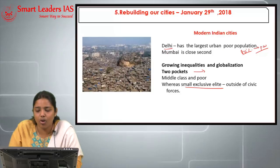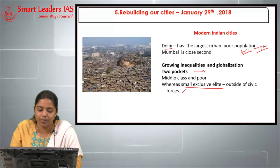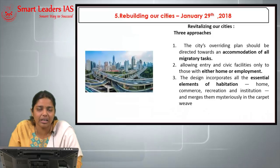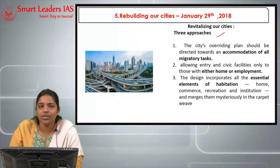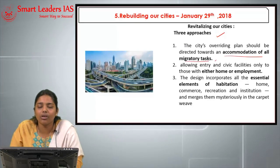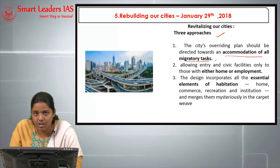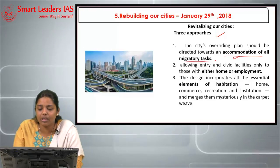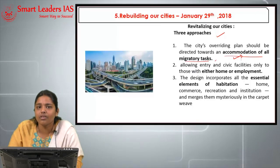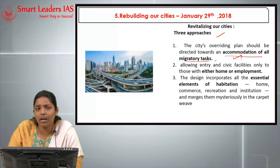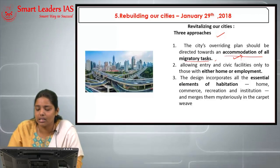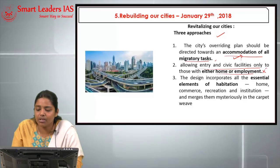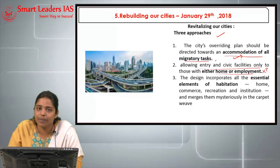There is a small exclusive elite that exists outside of civic forces, and we need to focus on the middle class and the poor located in the city. The author gives three approaches for revitalizing cities: first, accommodation of all migratory flows — a more inclusive approach of accommodating whoever comes into the city, though practical feasibility is a major question mark. Second, a more draconian approach of allowing only those with employment and a home to stay in the city. Third, a design approach incorporating all essential elements of habitation — home, economic activity, recreation, and institutions — woven together finely.